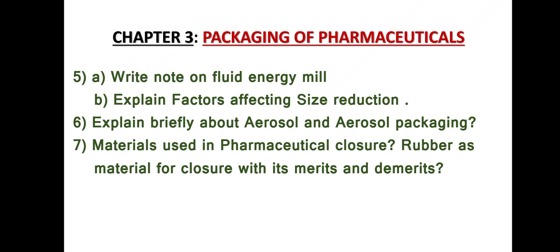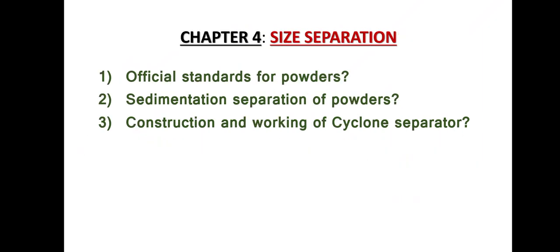Question six: Explain briefly about aerosol and aerosol packaging. Question seven: Materials used in pharmaceutical closures and rubber as a material for closure with its merits and demerits. These are the seven important questions in chapter three, Packaging of Pharmaceuticals.